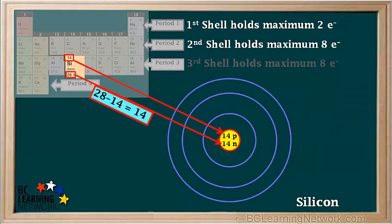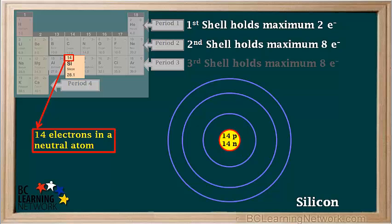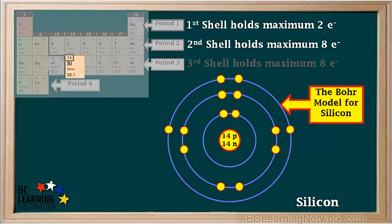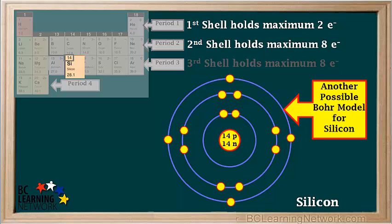Silicon has 14 protons and 28 minus 14, which equals 14 neutrons in its nucleus. A neutral silicon atom has 14 electrons, which can be arranged like this. So this is one possible Bohr model for silicon — it has one lone pair and two unpaired electrons in shell number 3. Another possible Bohr model for silicon shows 4 unpaired electrons in the third shell, and this model is commonly used for silicon atoms in molecules.